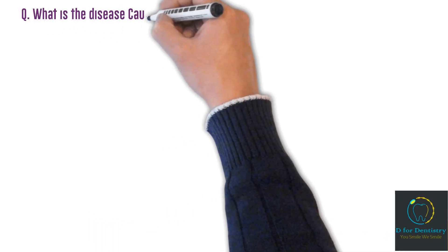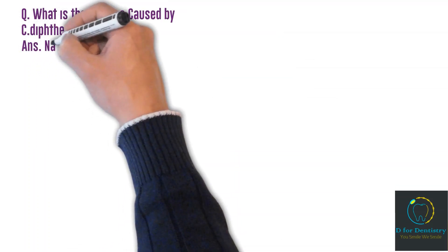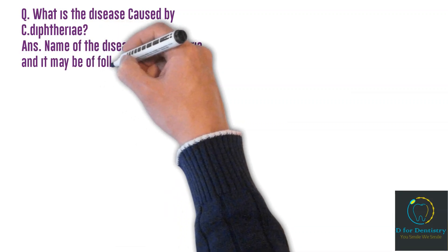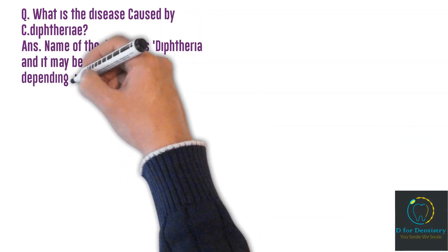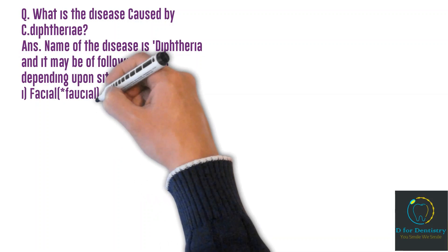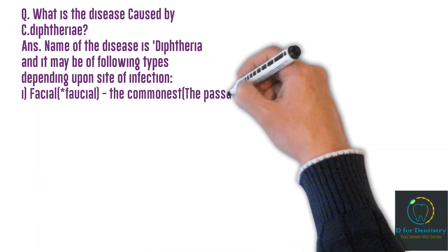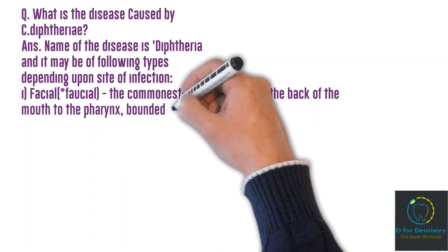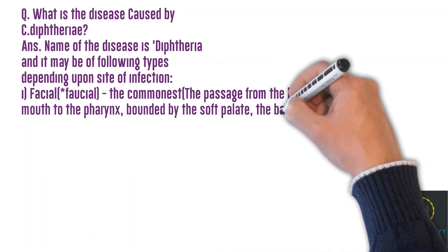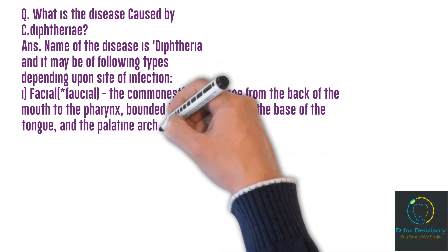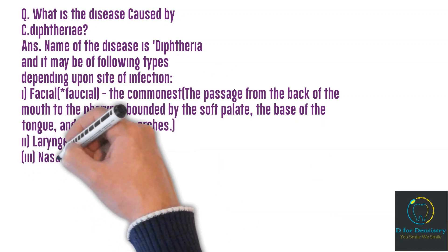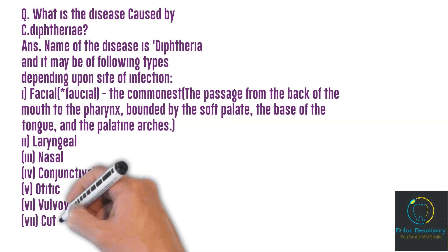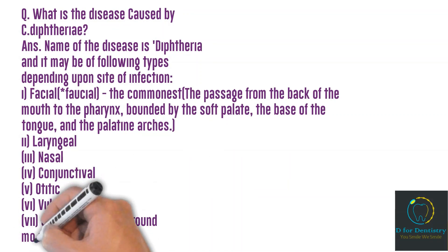Question: What is the disease caused by Corynebacterium diphtheriae? Answer: The disease is diphtheria, and it may be of the following types depending upon the site of infection: 1. Faucial — the commonest site, passing from the back of the mouth to the pharynx bounded by the soft palate, the base of tongue, and palatine arches. 2. Laryngeal. 3. Nasal. 4. Conjunctival. 5. Otitic. 6. Vulvovaginal. 7. Cutaneous — mainly around mouth and nose.